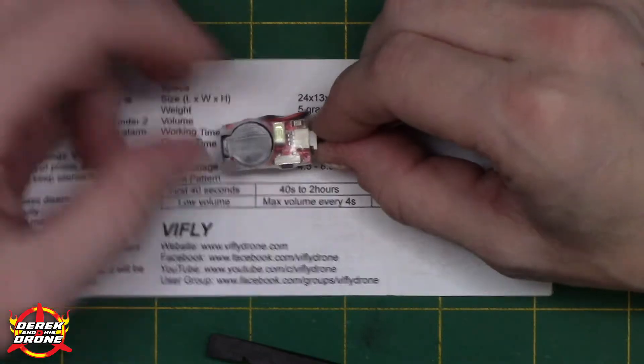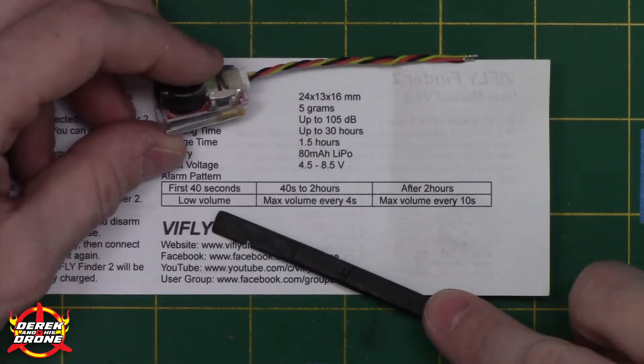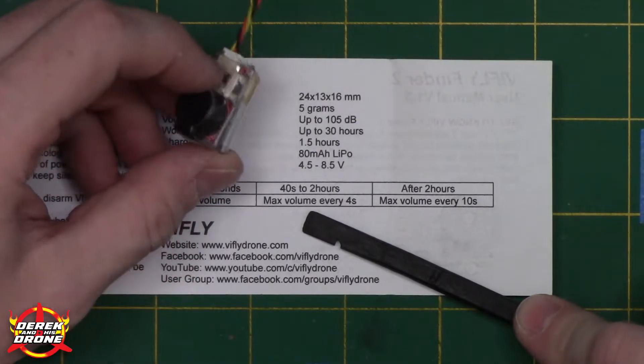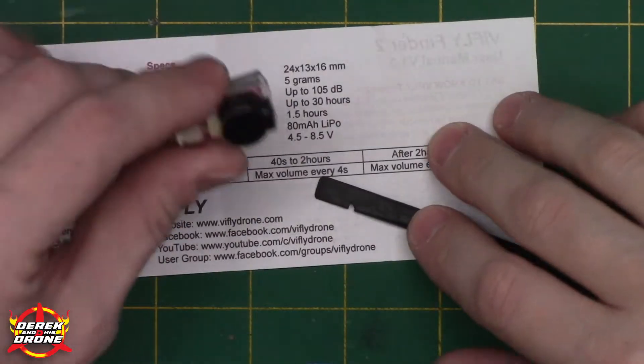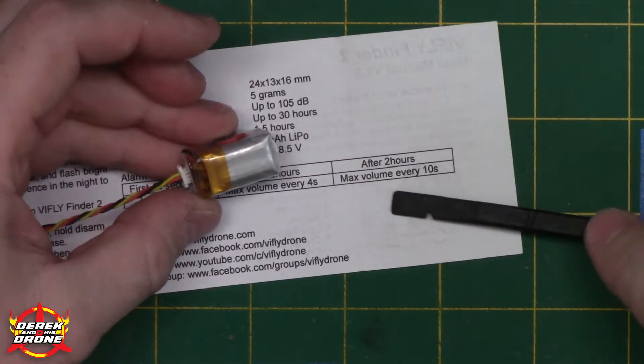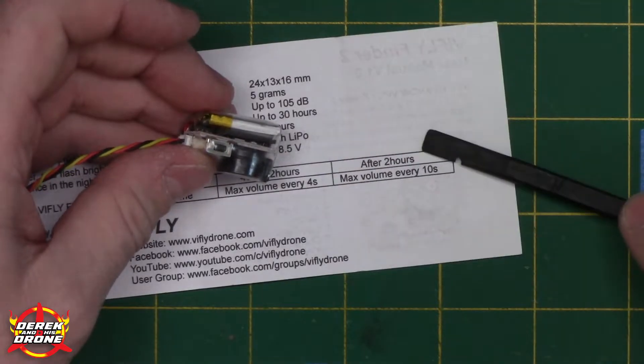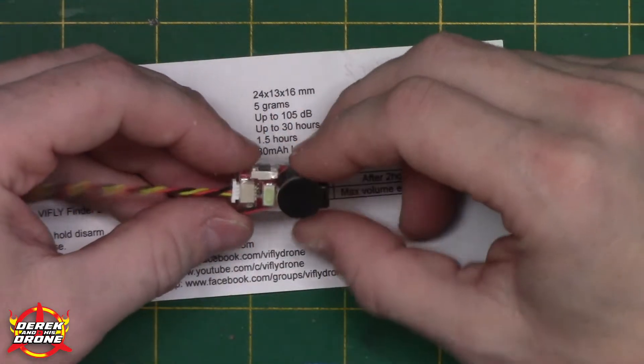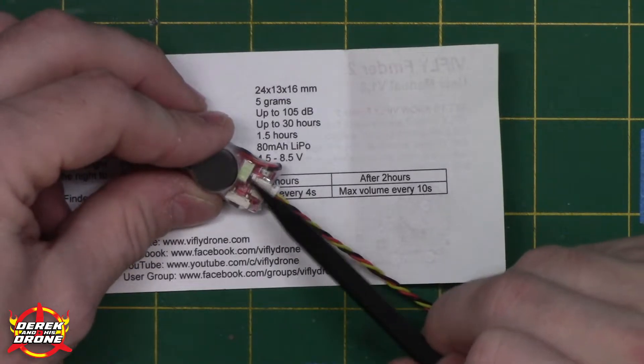You do have a couple of different alarm patterns here. One thing about this particular buzzer is there isn't any configuration as far as how it is going to beep. For the first 40 seconds after disconnecting power you're going to have a low volume beep. After 40 seconds to two hours it's going to beep at maximum volume every single four seconds, and it doesn't just do a single chirp, it's kind of like a little pattern of a chirp which makes it much easier to hear and find your drone when it's lost. After two hours it's going to start beeping at every 10 seconds to preserve the battery.